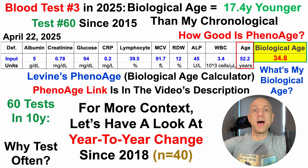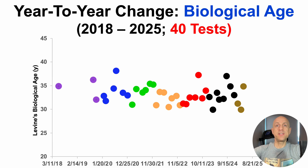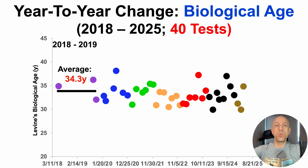With that in mind, I've started testing more often — now up to eight times per year — as I think more tests and taking the average of all of those tests and then looking at year-to-year change is a better measure of the rate of aging relative to one or two tests over a year or two-year span. For more context, let's take a look at year-to-year change for biological age since 2018, as I have 40 tests over that period. Starting in 2018 is when I started including HSCRP for every blood test so I could calculate my biological age using PhenoAge.